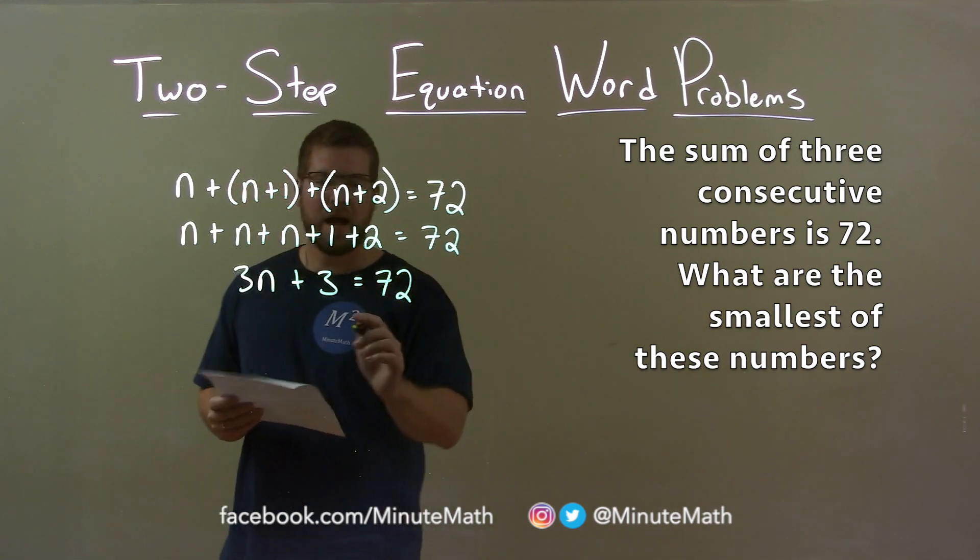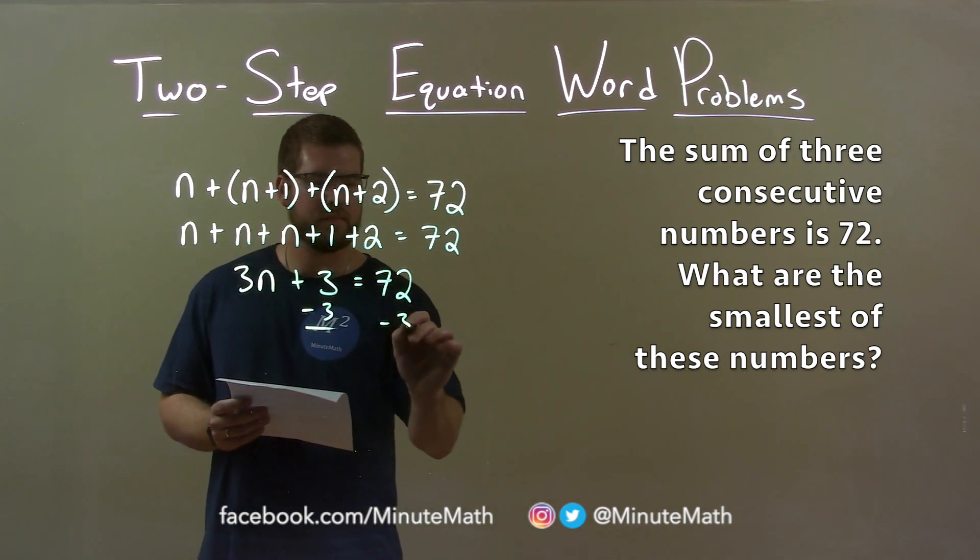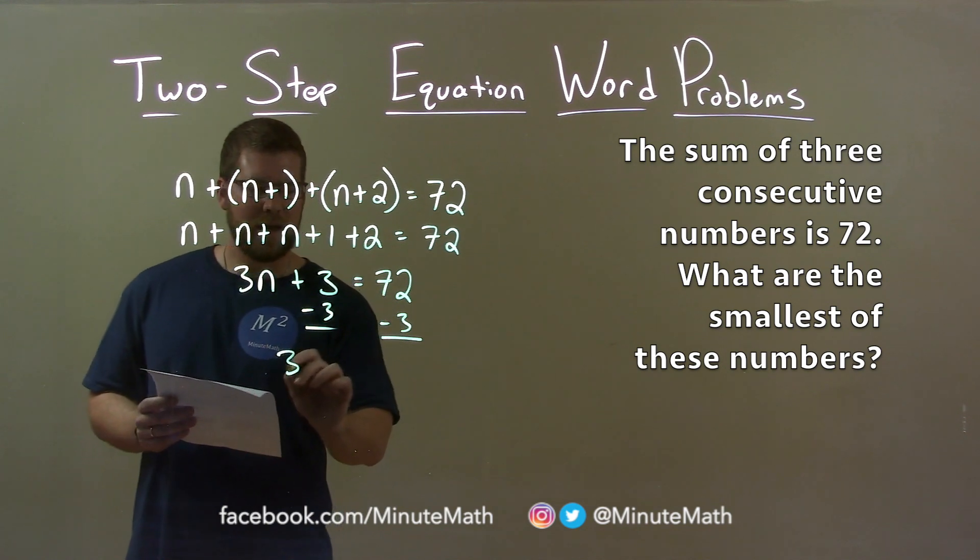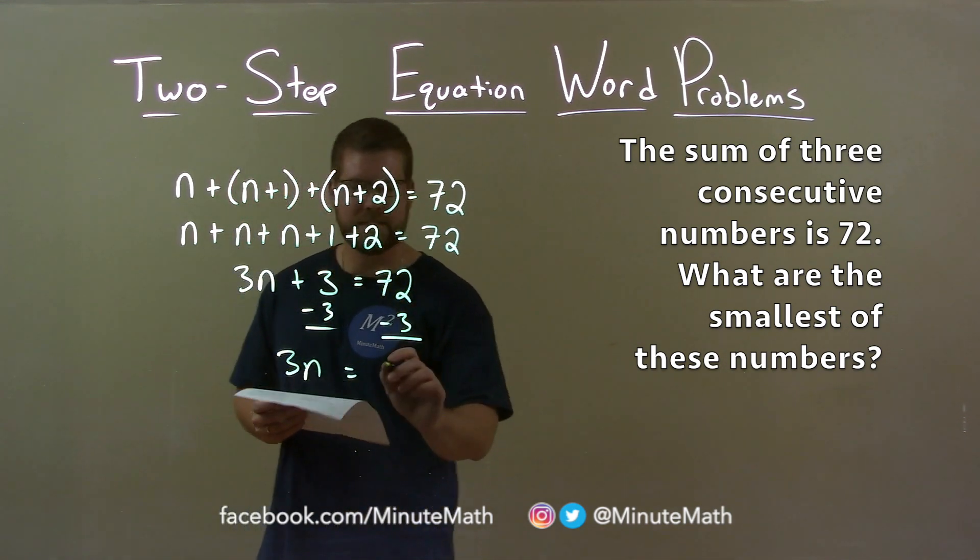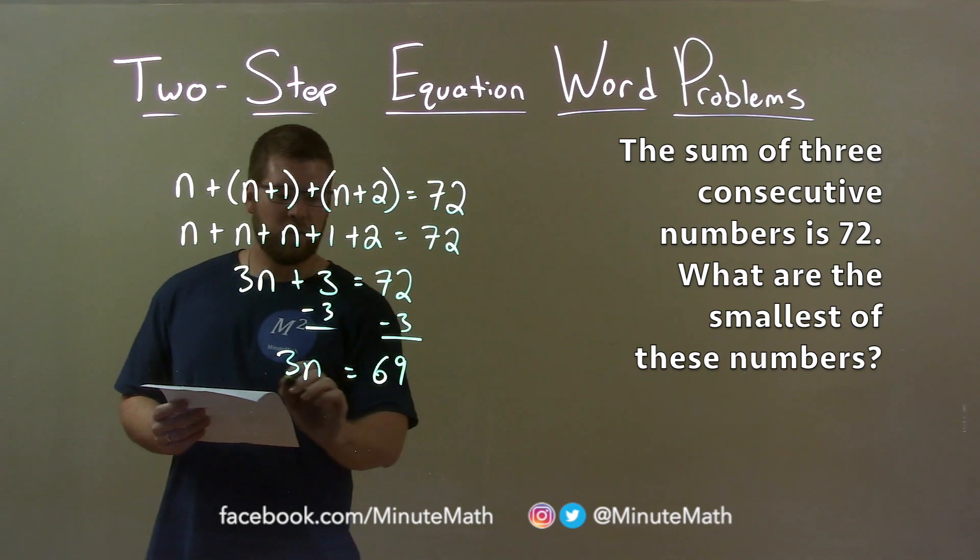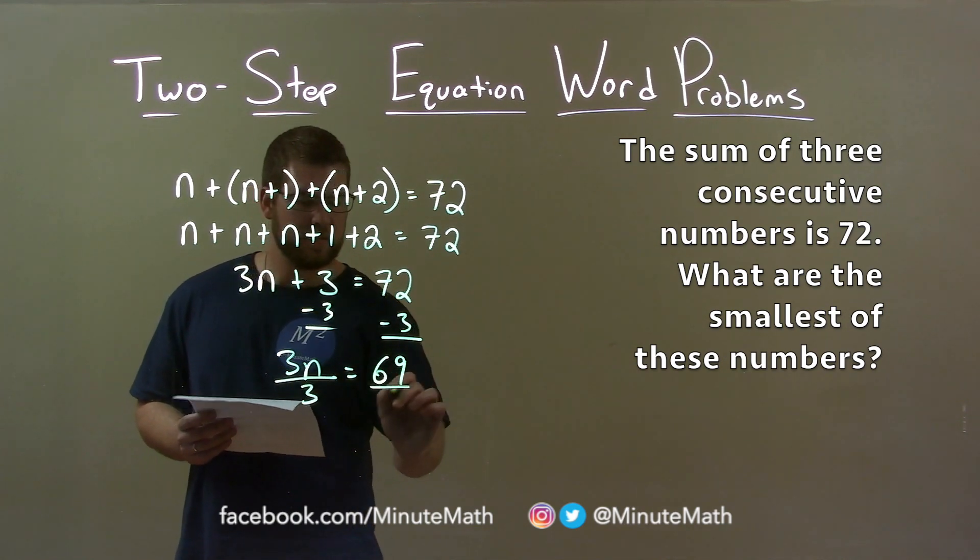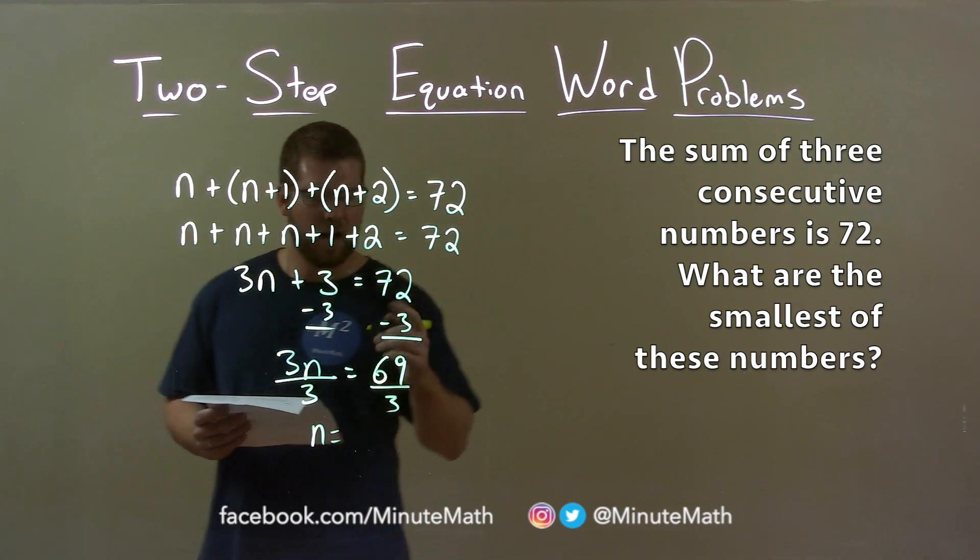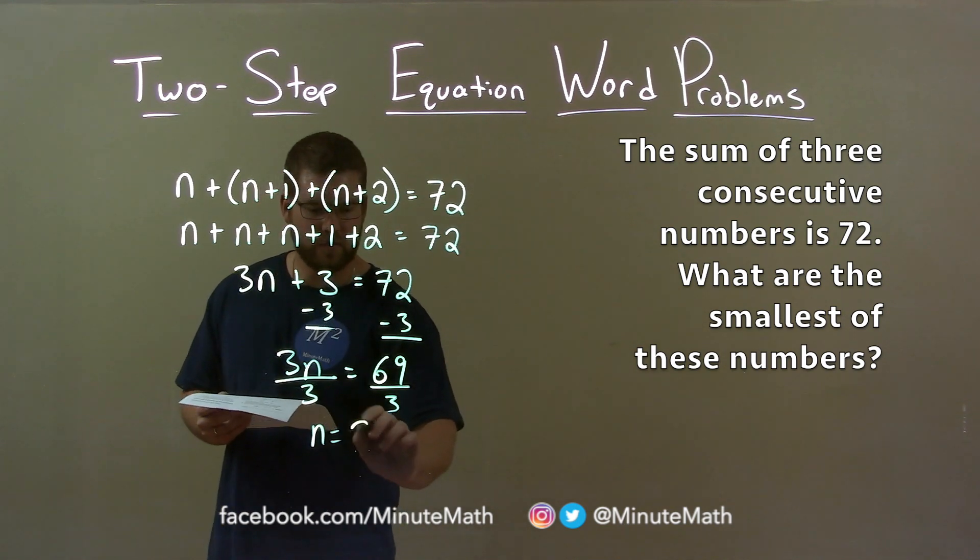If I subtract 3 from both sides, I'm left with 3n by itself here, and 72 minus 3 is 69. Divide both sides by 3, this gets n by itself, and 69 divided by 3 is 23.